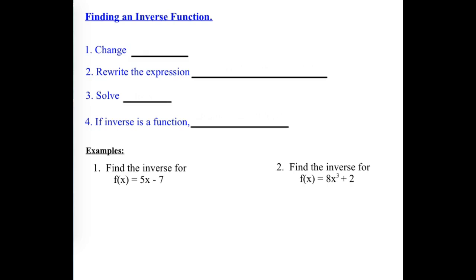The steps for finding an inverse algebraically: first, change f of x and think of it as a y — we know those are interchangeable; f of x notation just indicates the original equation is a function that would pass the vertical line test. Then we switch our x and y's around — where you see a y, write an x; where you see an x, write a y. Then we solve for that new y.